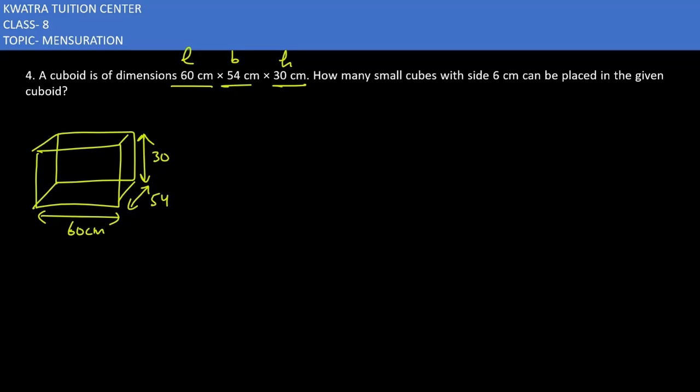Now we have to find how many small cubes with size 6 cm can be placed in the given cuboid. So there are many of them, because if you look at it,